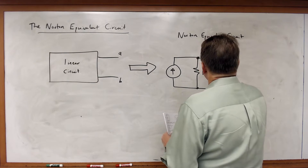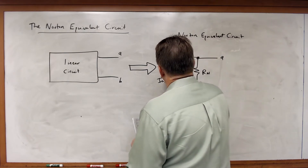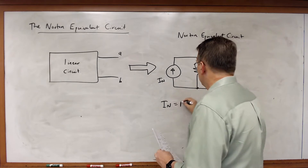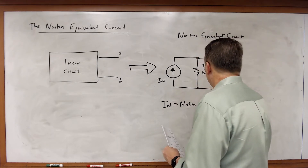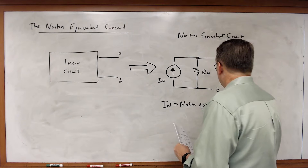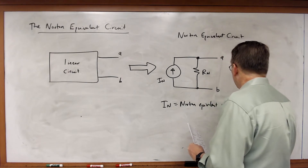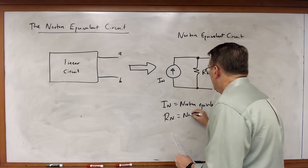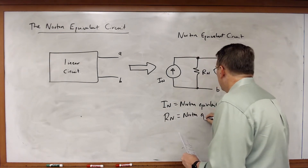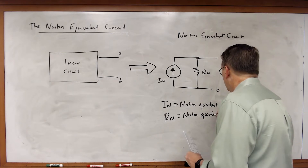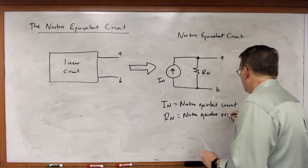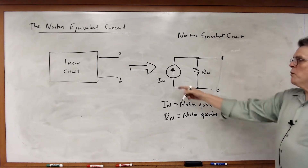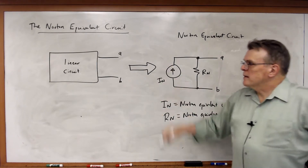R sub N and I sub N — I sub N is the Norton equivalent current, and R sub N is equal to the Norton equivalent resistance. Norton proved that this transformation exists for any linear circuit.